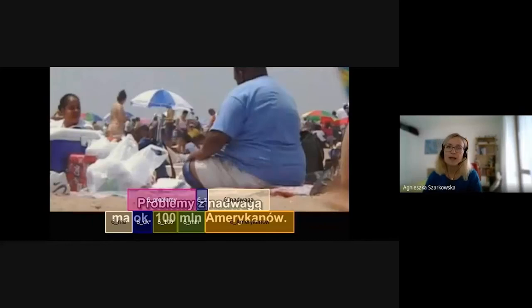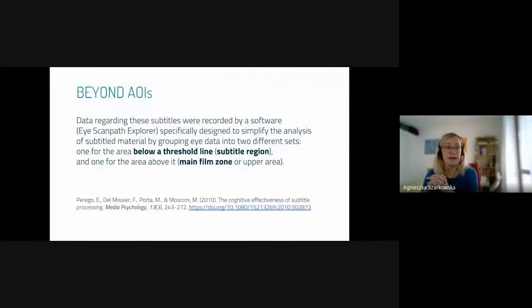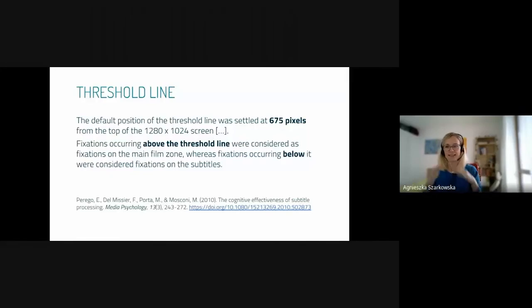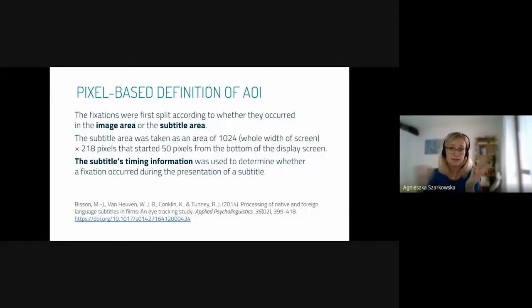When you think about areas of interest, when you just have text, it's quite easy. The software automatically divides things for you. But when you work with subtitles, these tend to be burned into the image. Whenever you want to analyze a certain word separately, you would need to draw areas of interest manually. That obviously takes ages. Then you don't have all the information about word frequency, word length—you'd have to do that manually. Some people have tried to go beyond areas of interest.